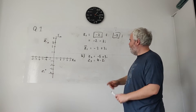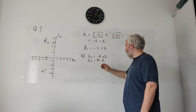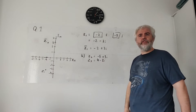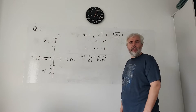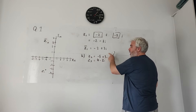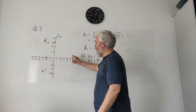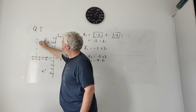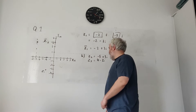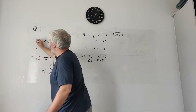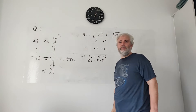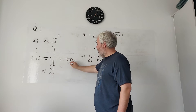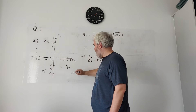On to part B. They give us two new numbers: Z2 equals minus 5 plus 3i, and Z3 equals 4 minus 2i. They ask us to plot these on the diagram. For Z2, we go to minus 5 and up to plus 3 — use a dotted line with a ruler. Label it Z2. For Z3, we go to plus 4 and minus 2 and label it Z3.